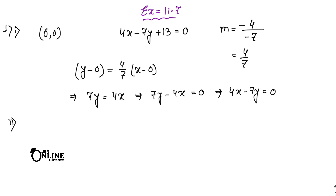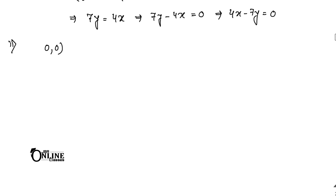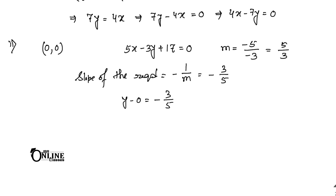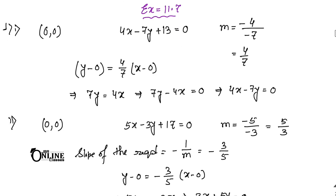Sum 2: Write the equation of the line through the origin and perpendicular to 5x - 3y + 17 = 0. Slope m₁ = 5/3. The slope of the perpendicular line is -1/m = -3/5. So y - 0 = (-3/5)(x - 0), giving 5y = -3x, or 3x + 5y = 0.